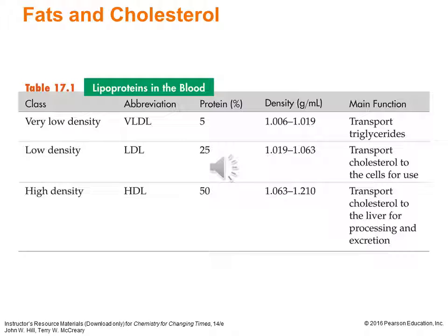Table 17.1 from the text shows the VLDLs have about 5% protein and very low density — their main function is to transport triglycerides. LDLs have about 25% protein and higher density, transporting cholesterol to cells and associated with deposits. The high-density lipoproteins, HDLs, are about half protein, with very high density. Because they transport cholesterol to the liver for processing and excretion, they're called the good cholesterol — getting cholesterol out of circulation.